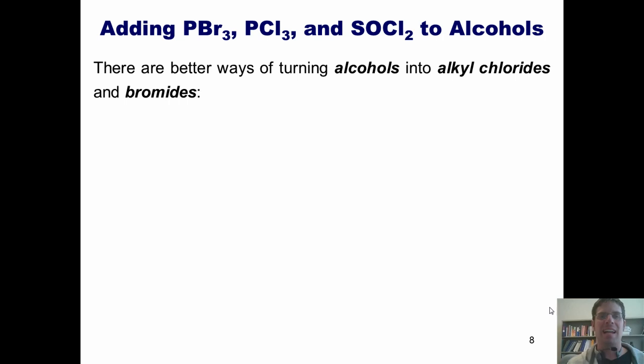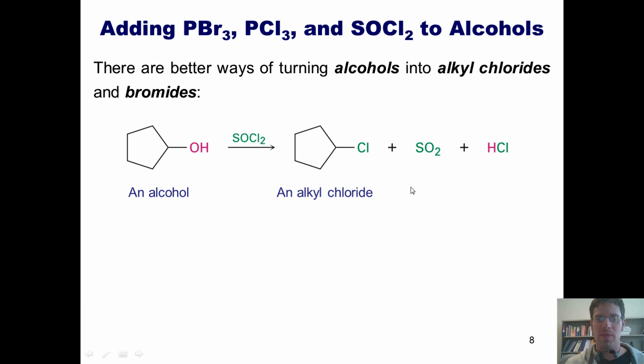This brings us to our next reactions, adding PBr3, PCl3, or SOCl2 to alcohols. Now, I acknowledge that the two reactions I've shown you thus far, reacting in alcohol or an ether with HX, does produce an alkyl halide, either an alkyl chloride, an alkyl bromide, or an alkyl iodide. However, there are better, much smoother, and more efficient ways of turning alcohols into alkyl chlorides and bromides. One of them is this. If I take an alcohol such as this cyclopentanol shown here and treat it with this reagent called thionyl chloride, which I often just call SOCl2, and usually I don't say SOCl2, I actually say SOCl2 like I'm howling at the moon, because it makes it more exciting. What happens is this OH gets replaced with a chlorine, giving me an alkyl chloride. This is a very efficient way to convert an alcohol directly into an alkyl chloride.